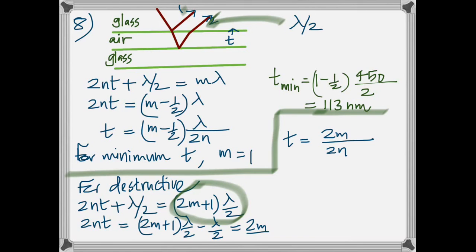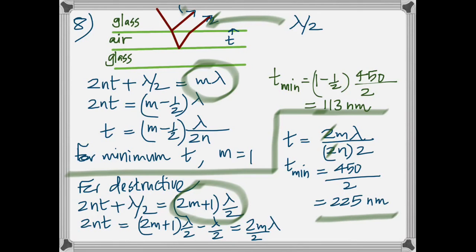Now this problem has to be done assuming that it is dark. So instead of m lambda here, we are using 2n plus 1 lambda by 2 and do the problem the same way again. In which case it's 225 nt. Thank you.